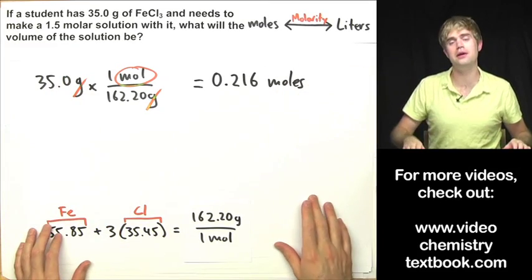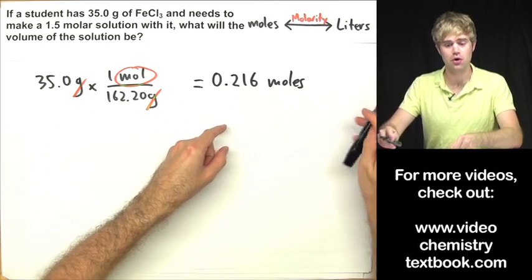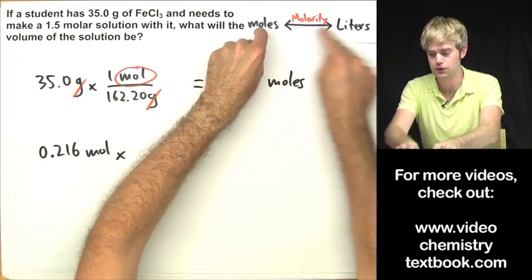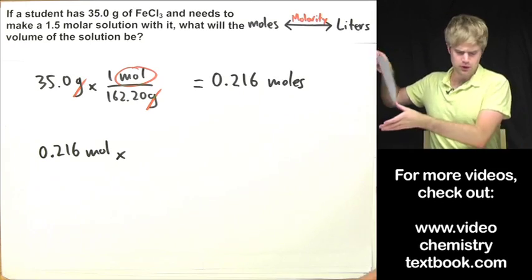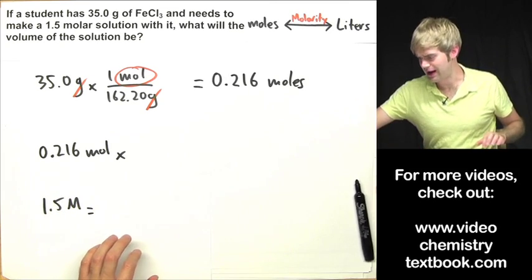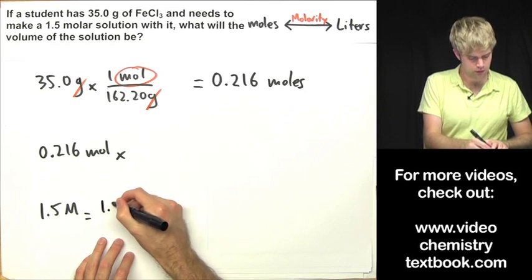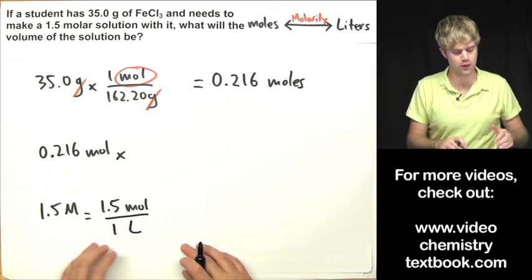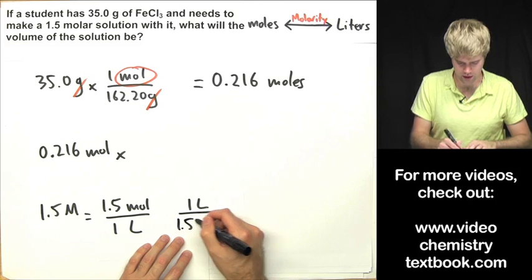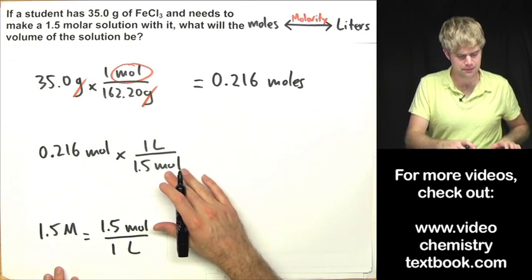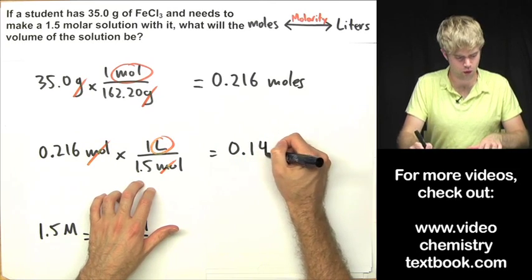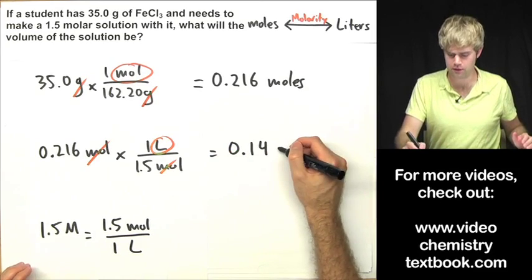Now we know how many moles of iron chloride we have. We take 0.216 moles and multiply by the molarity to go from moles to liters. We write 1.5 molar as a conversion factor: 1.5 moles divided by 1 liter. Since moles are on top on both sides, we flip it to 1 liter divided by 1.5 moles. Moles cancel, and we're left with liters: 0.14 liters, rounded to two significant figures.